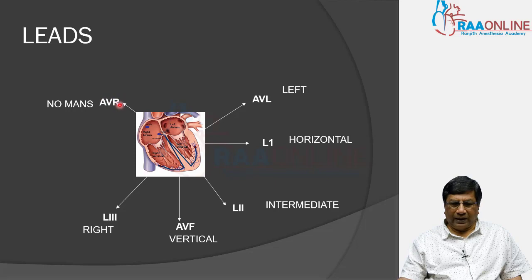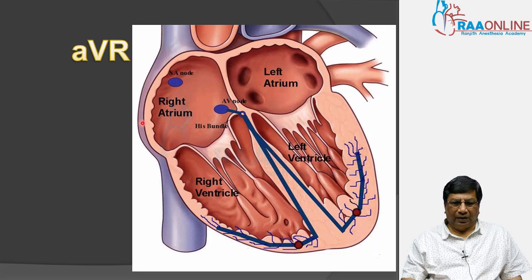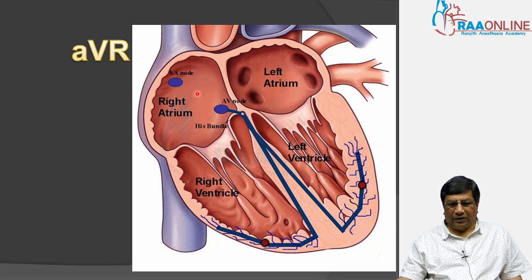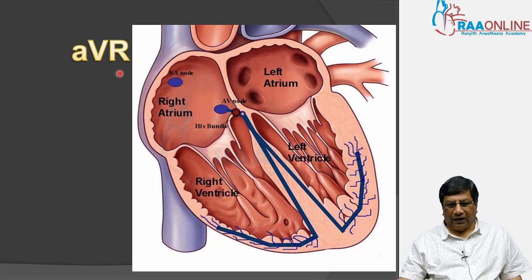Why is it called no man's land? Because the cardiac impulse from the sinus node causes atrial depolarization — shown as the P wave — which travels away from AVR. So the P wave has to be negative in AVR because atrial depolarization is moving away from it.